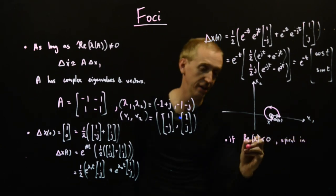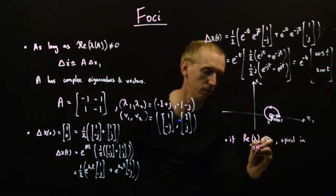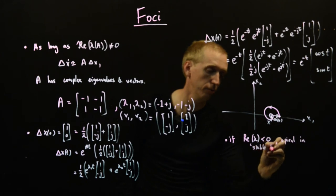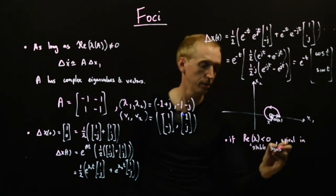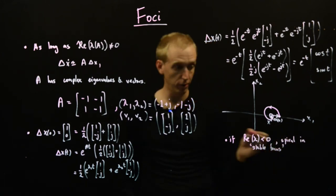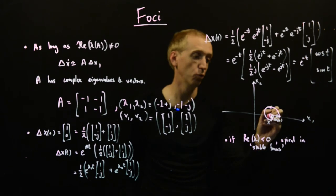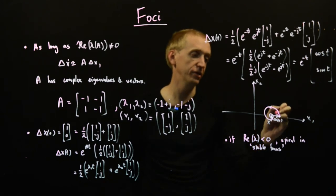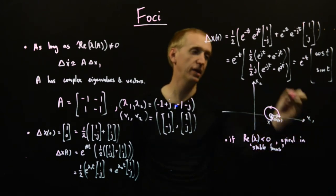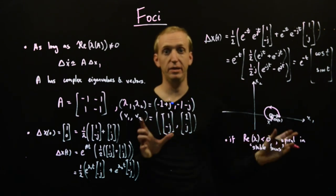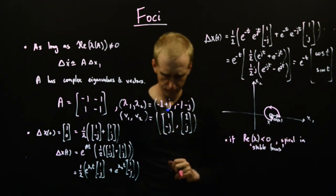When you have complex eigenvalues, you have some spiraling in to the origin or away from the origin. If the real part of the eigenvalues are less than 0, you spiral in. This is a stable focus. The converse is an unstable focus. If this is greater than 0, then we have an unstable focus and our trajectories would still be spiraling, but they would be following a pattern that gets bigger and bigger.